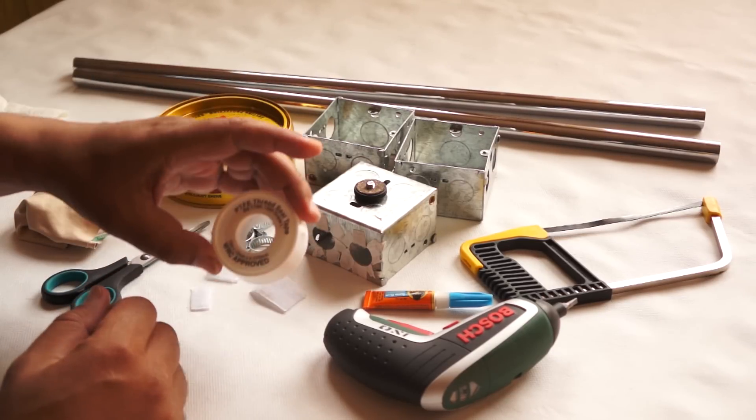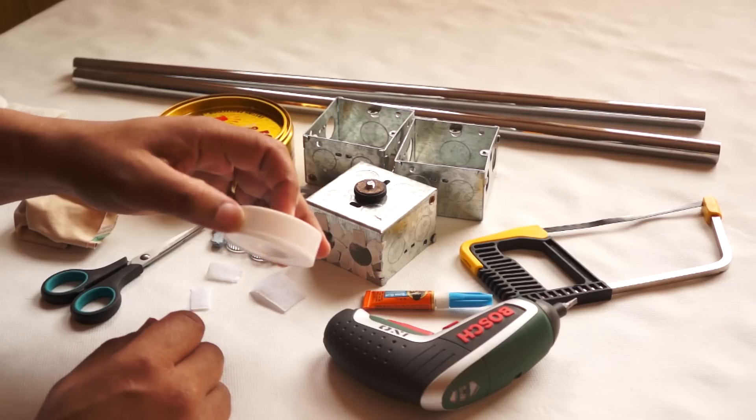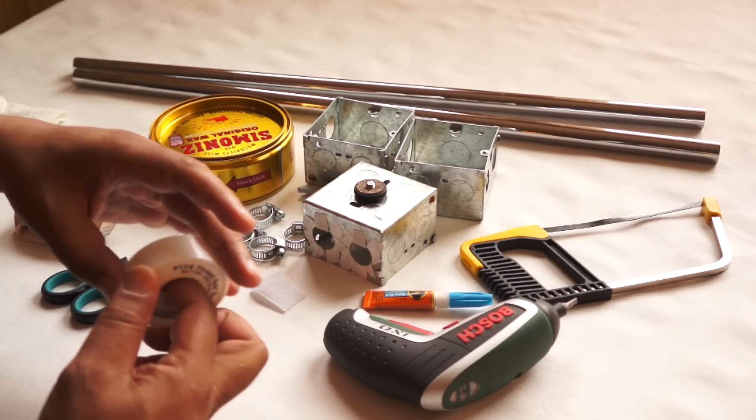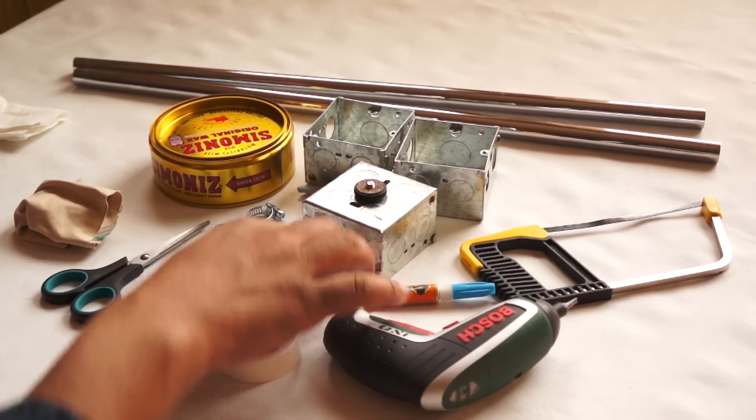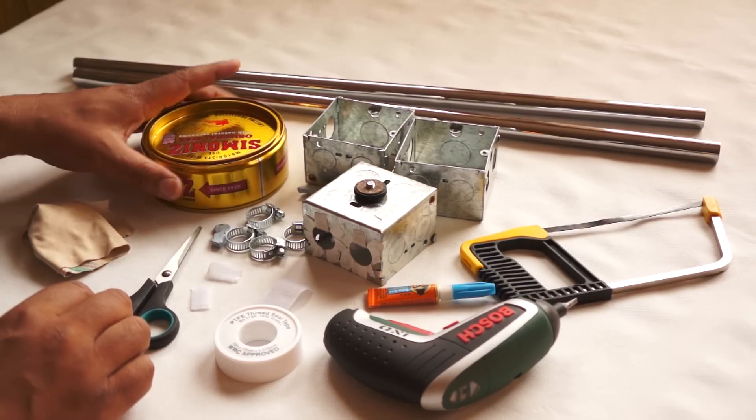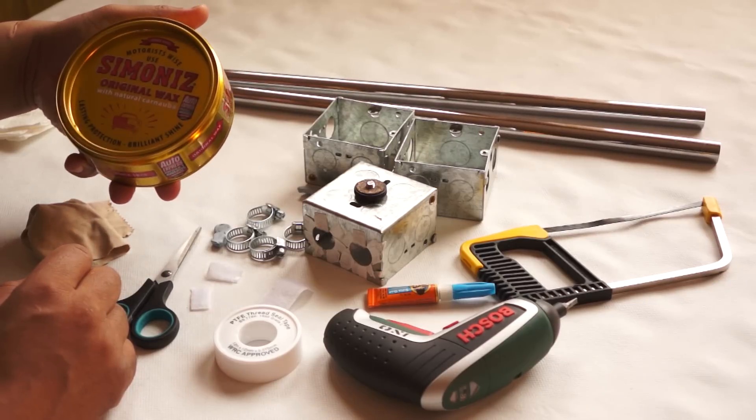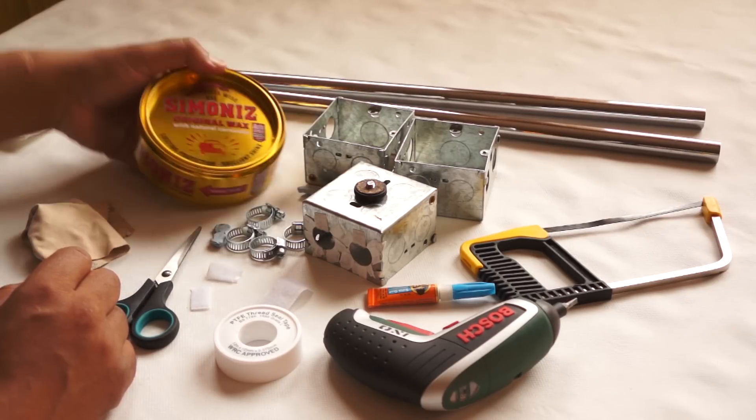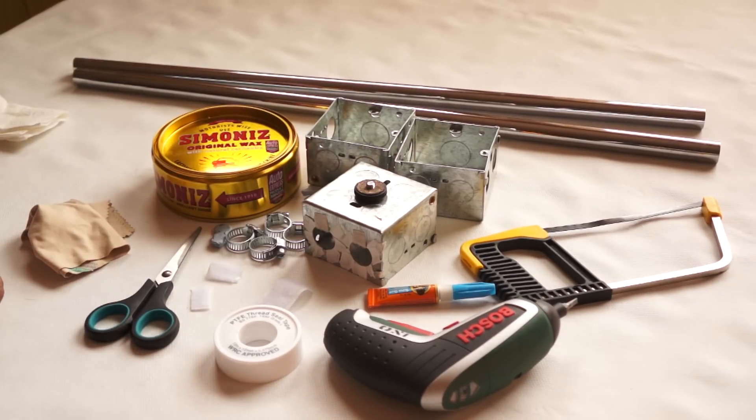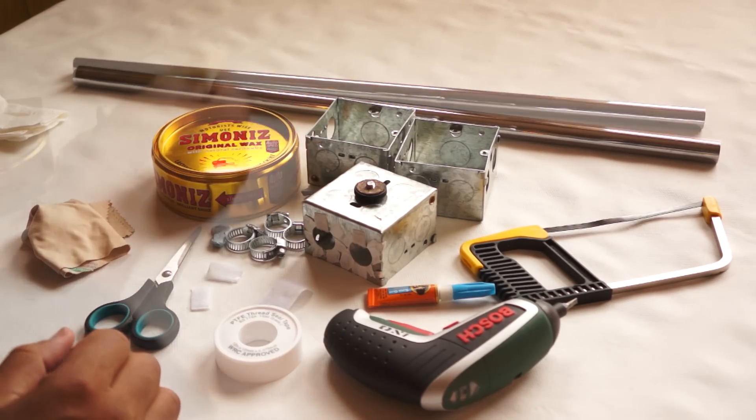Just standard pipe circlips, some PTFE thread seal which is the Teflon tape used for plumbing, super glue, a little bit of velcro, scissors, and car wax, proper carnauba car wax which is the best as they say. And that's it, then just assemble slowly but surely.